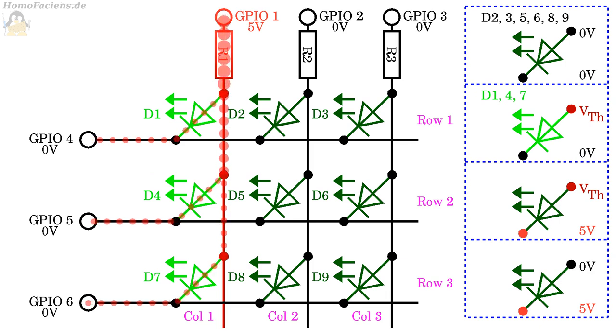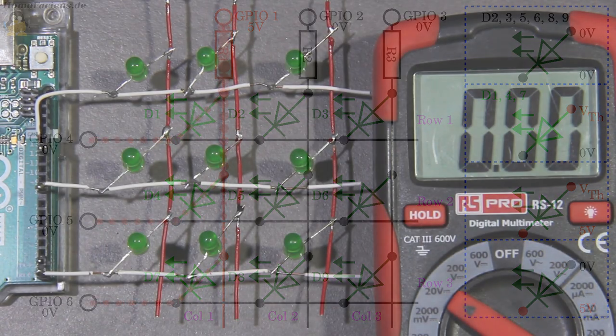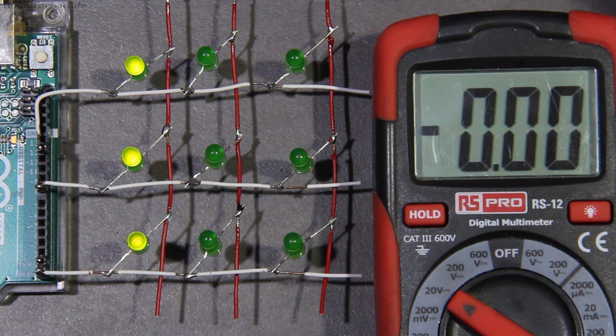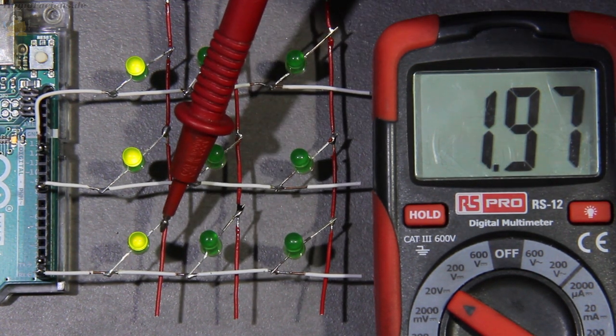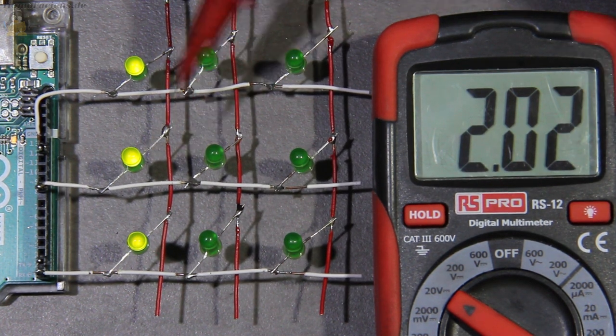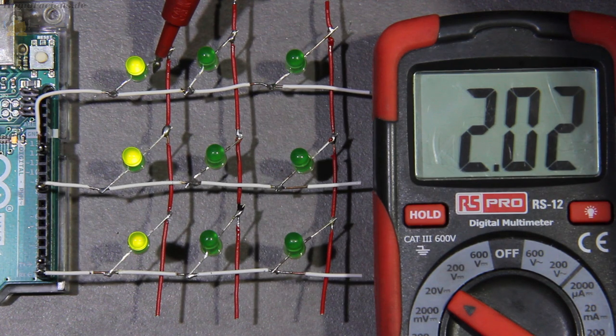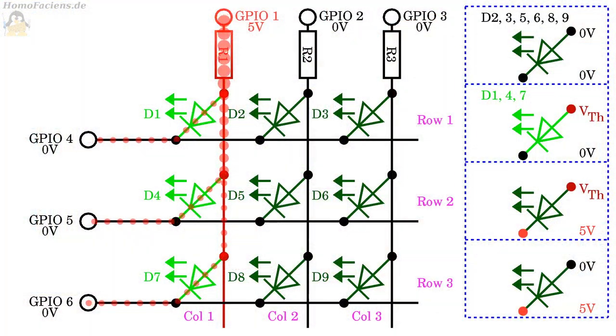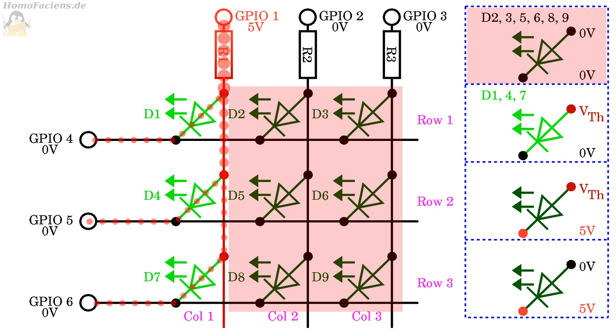The source current flows out of GPIO 1 via resistor one and is split to the 3 LEDs with the partial currents flowing into GPIOs 4, 5, and 6. A voltage of 2V drops across the 3 diodes being connected in parallel, which is slightly more than the minimum forward voltage. All other diodes have a voltage of 0V on both sides, which means these LEDs remain switched off.